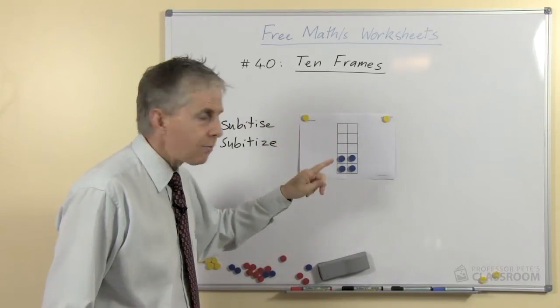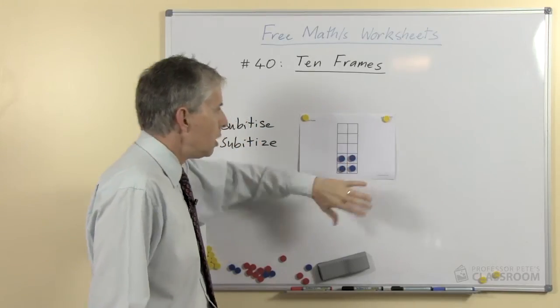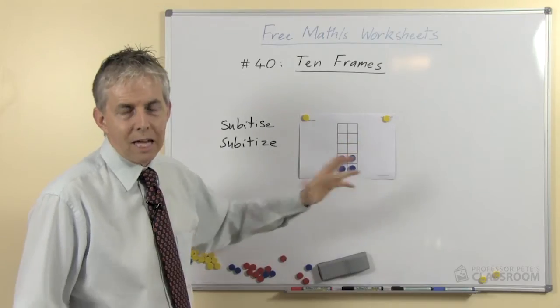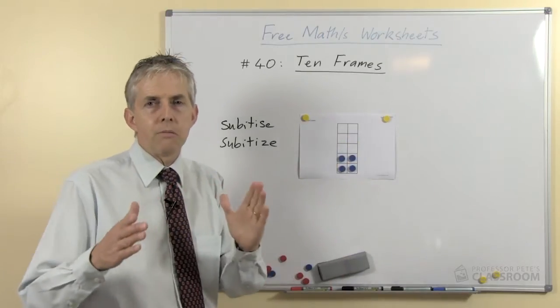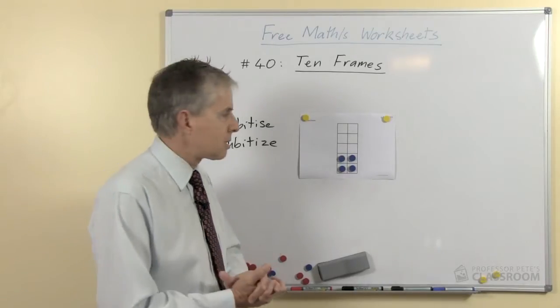So an adult can look at that easily and go, that's four. You don't have to apply a numeral to each one and go one, two, three, four. If I put twenty of them on there you'd have to count them, unless they're in some ordered arrangement, because there are too many. But with small numbers we can subitize.